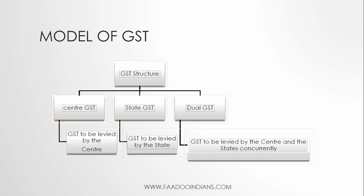The GST structure, as depicted in this picture, includes Center GST, State GST, and Dual GST. Three approaches are followed: GST levied by the center is Central GST, by states is State GST, and Dual GST covers items that fall under both. The dual GST model proposed by the committee and accepted by the center will have a dual system for improving the tax structure in India.